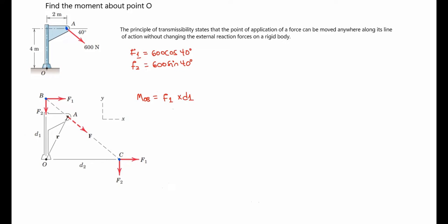Our main goal here will be to find D1. From the figure we know that we have an angle of 40 degrees at this point here. You have an angle of 40 degrees here, so for that reason you are going to have here also 40 degrees. Let me name this side as X. From the figure we know that we have from this point to this point a distance of 4 meters, so D1 will be equal to 4 meters plus X. Our goal here will be to find X.